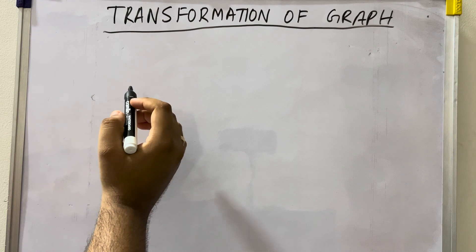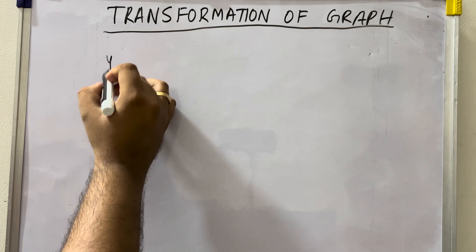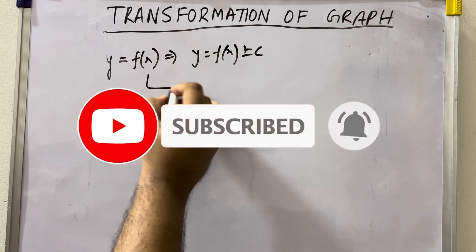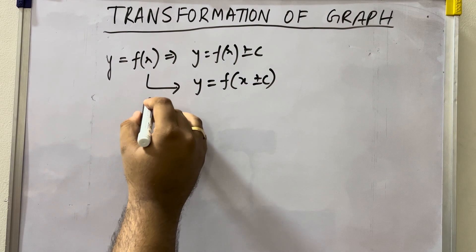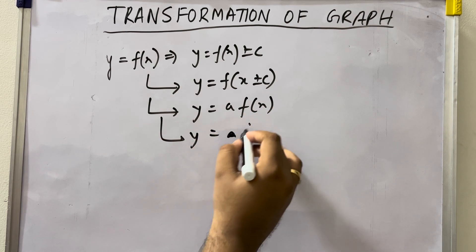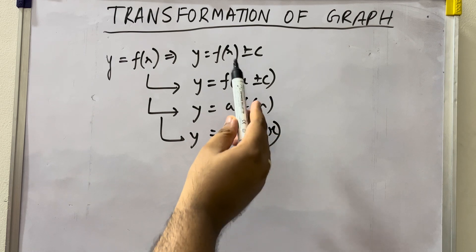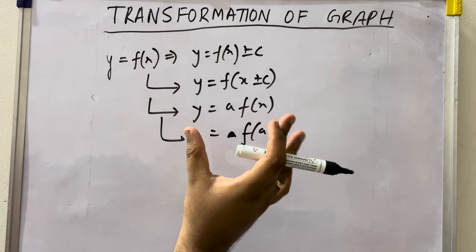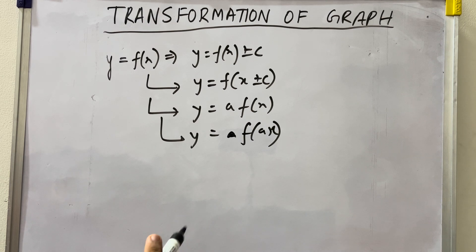Hello learners, welcome back to my channel Maths Made Easy. Today is the continuation lecture of transformation of the graph. In the earlier lecture we have seen how to transform y = f(x) to y = f(x) ± c, and f(x) to f(x ± c), as well as y = af(x) and y = f(ax). These were the four transformations — shifting along the y-axis, shifting along the x-axis, and expanding or reducing the graph.